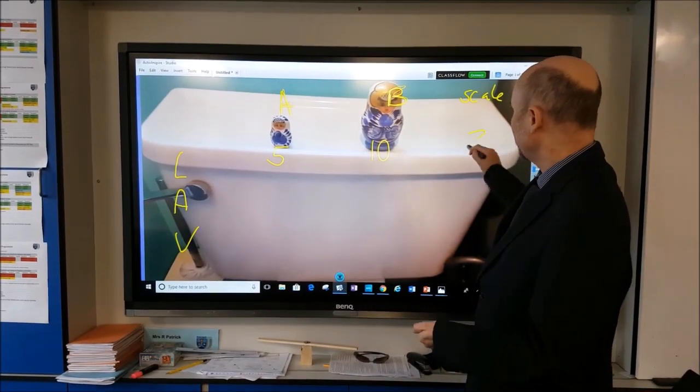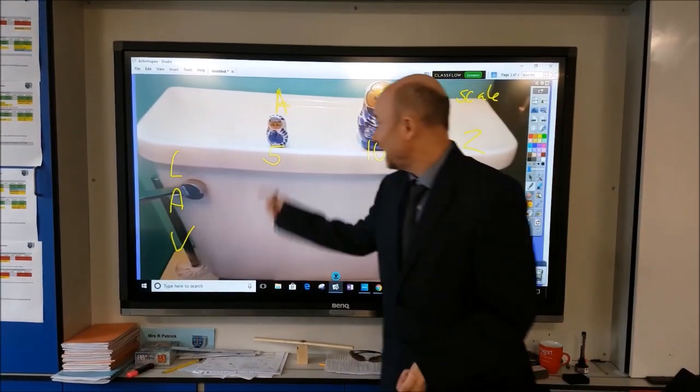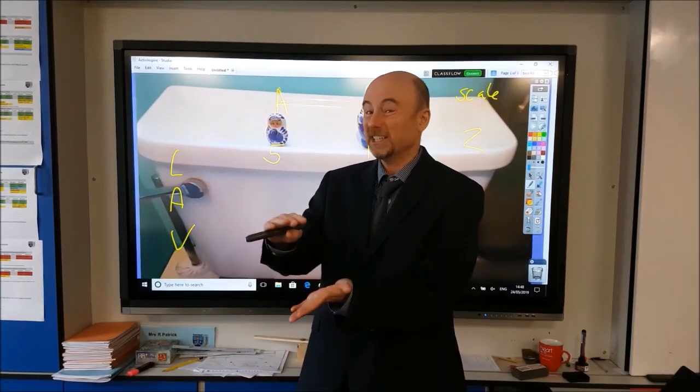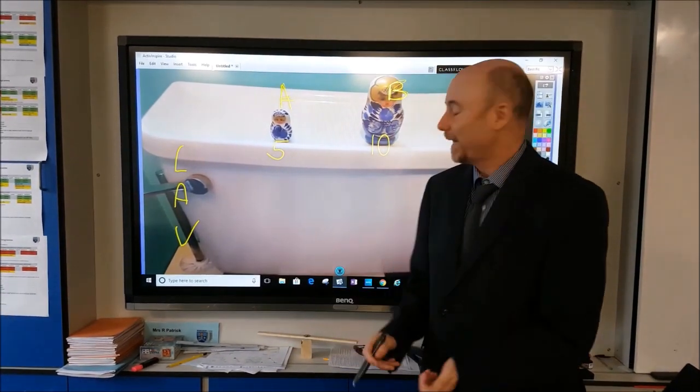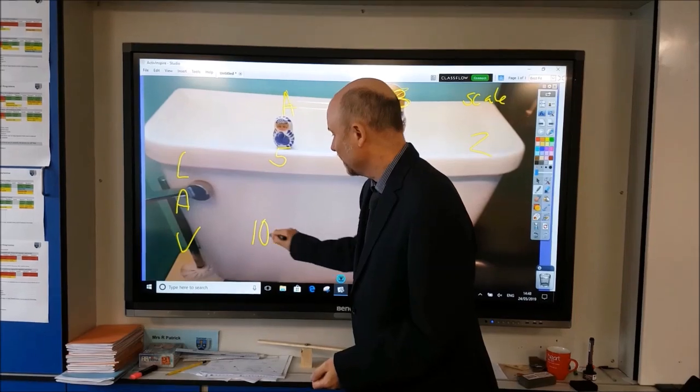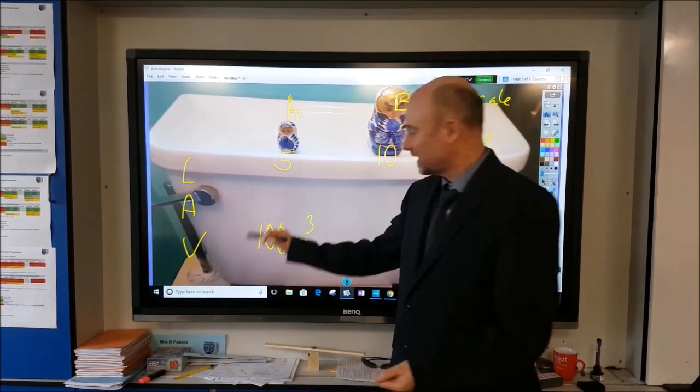Two. Two is the scale factor. Two. Now when this big boy here, your tiny boy, was eating his pasta, he managed to consume 100 centimeters cubed worth of pasta.